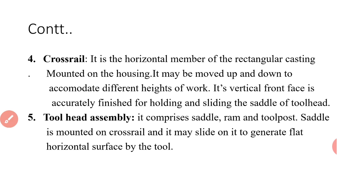Next is cross rail. Cross rail is a horizontal member of rectangular casting mounted on the housing. The cross rail can be moved up and down on housing so that the tool can be adjusted according to different lengths of workpieces. The vertical front face of cross rail is also accurately finished for holding and sliding the saddle of tool head.